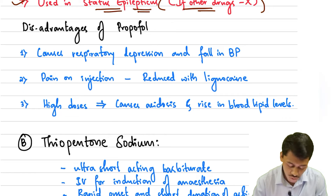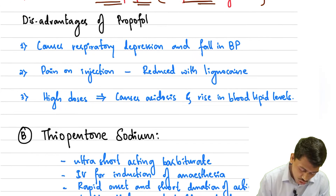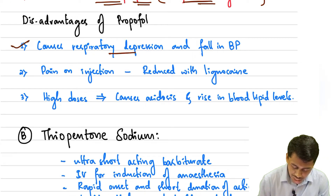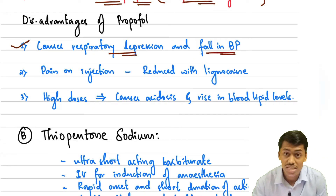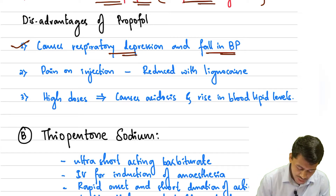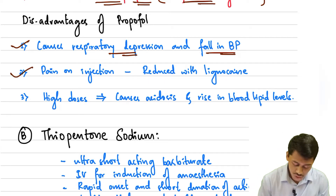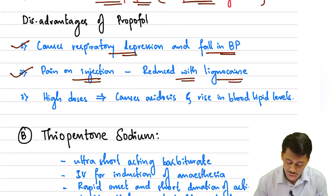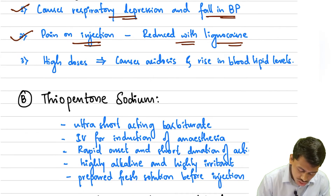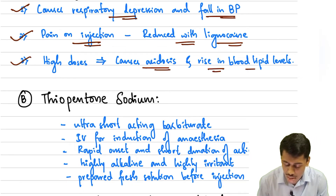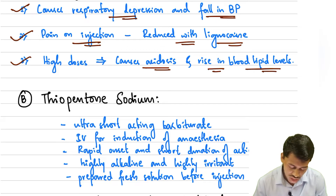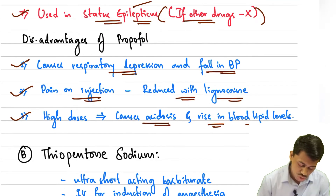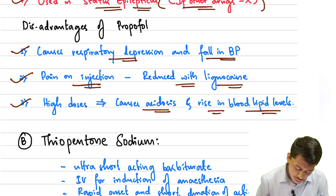The disadvantages of propofol are that it causes respiratory depression and a fall in blood pressure. There is also pain on injection; to relieve this, lignocaine is given to reduce the pain during injection. At high doses, propofol causes acidosis and also a rise in blood lipid levels.